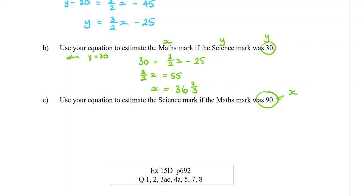Part c: Use your equation to estimate the science mark given that the maths mark was 90. That is the x because we're given the maths score. When x equals 90: y equals 3 over 2 times 90 minus 25, which is 110. If these are percentages we have a problem, but that's what the equation predicts.